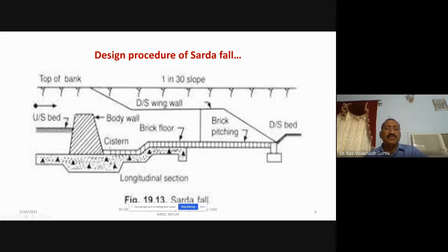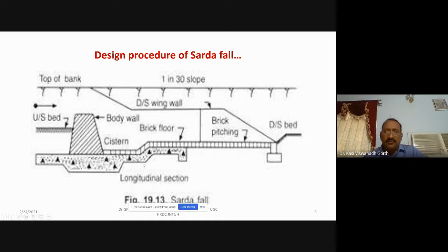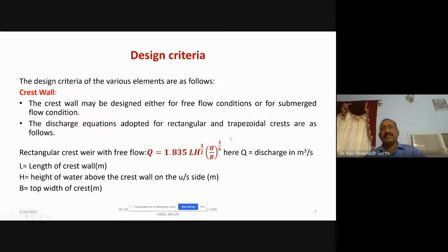As shown here, we have the body wall, cistern, then impervious floor, followed by protection provided in the form of blocks, pitching, brick walls, pitching, and so on.